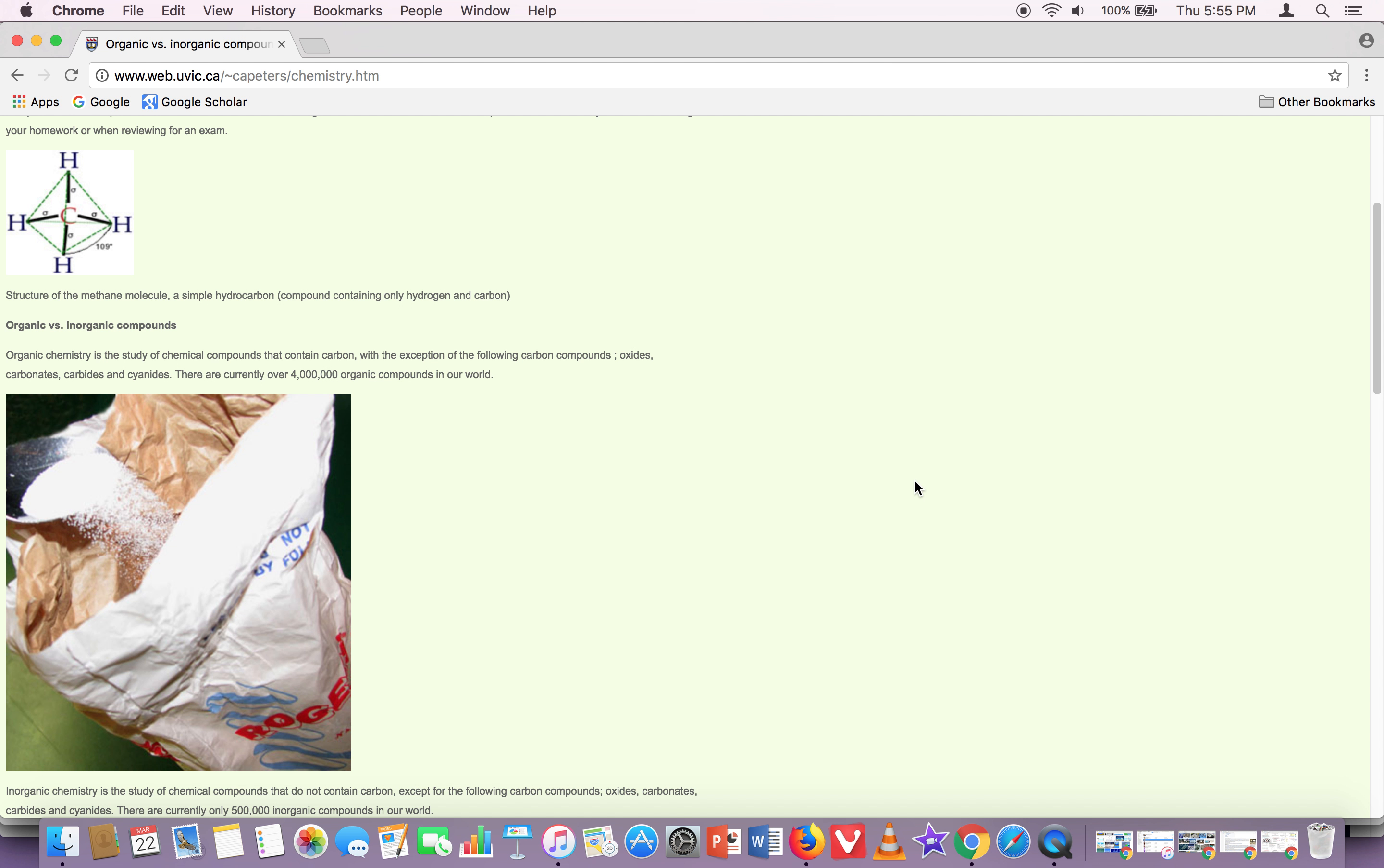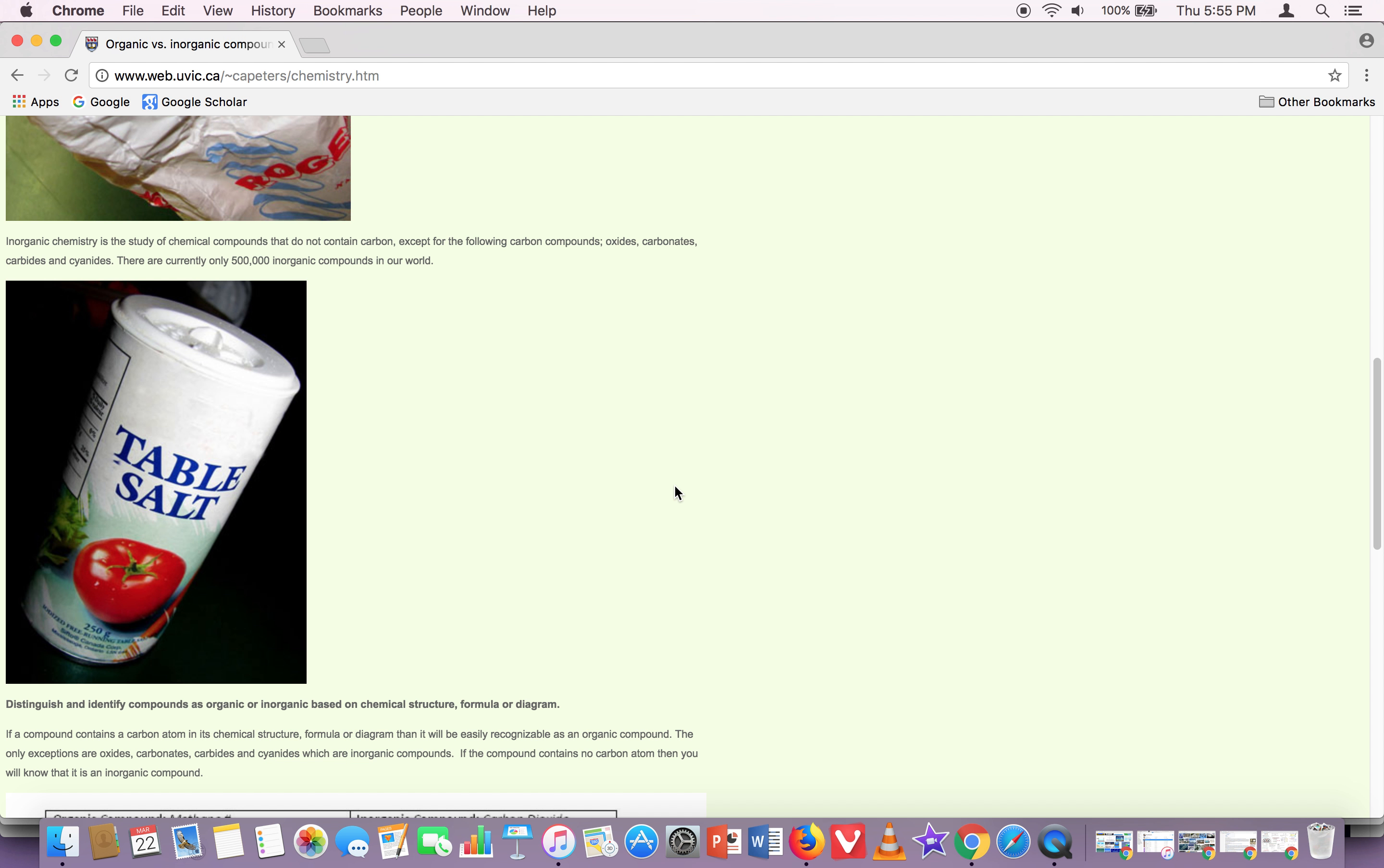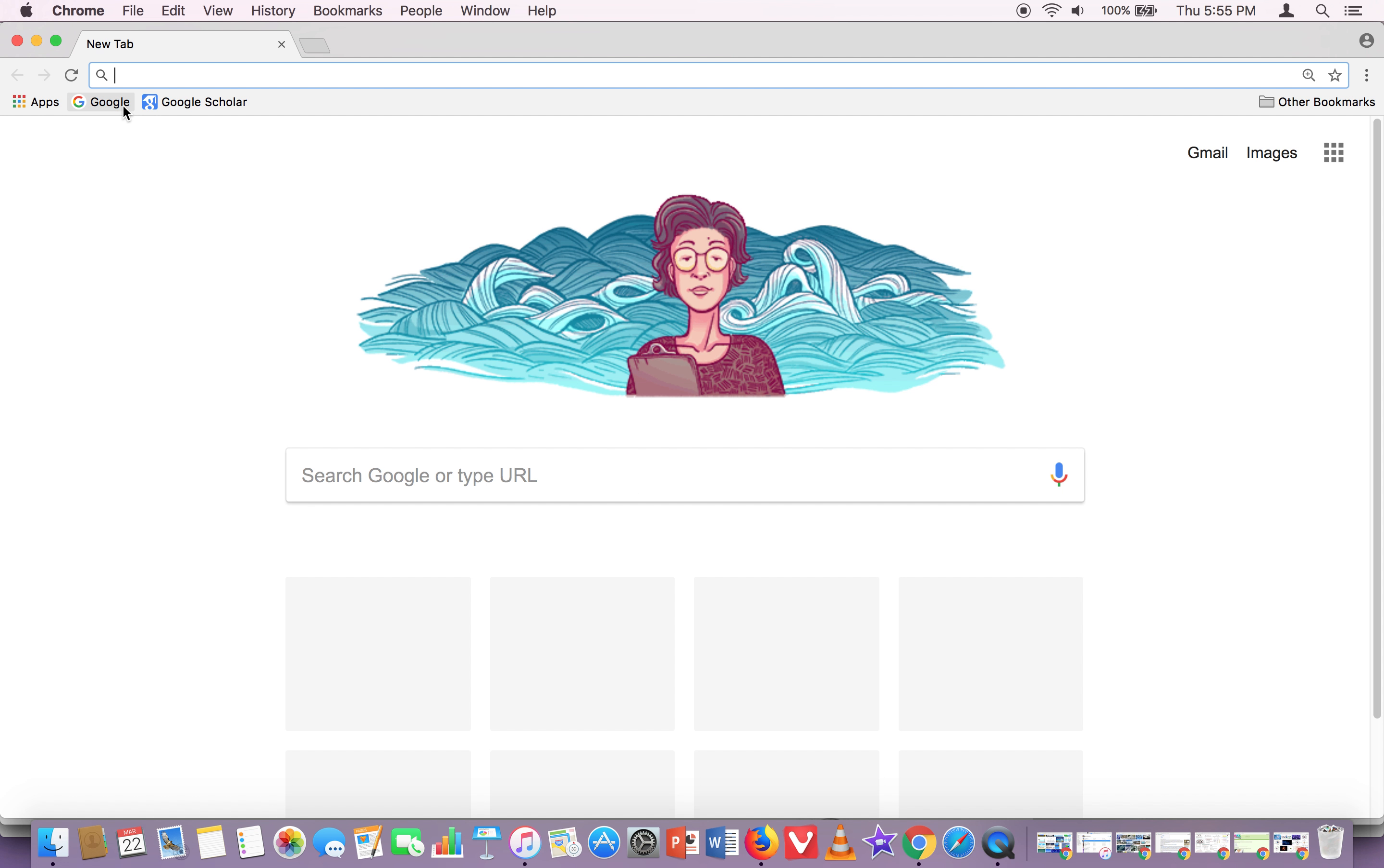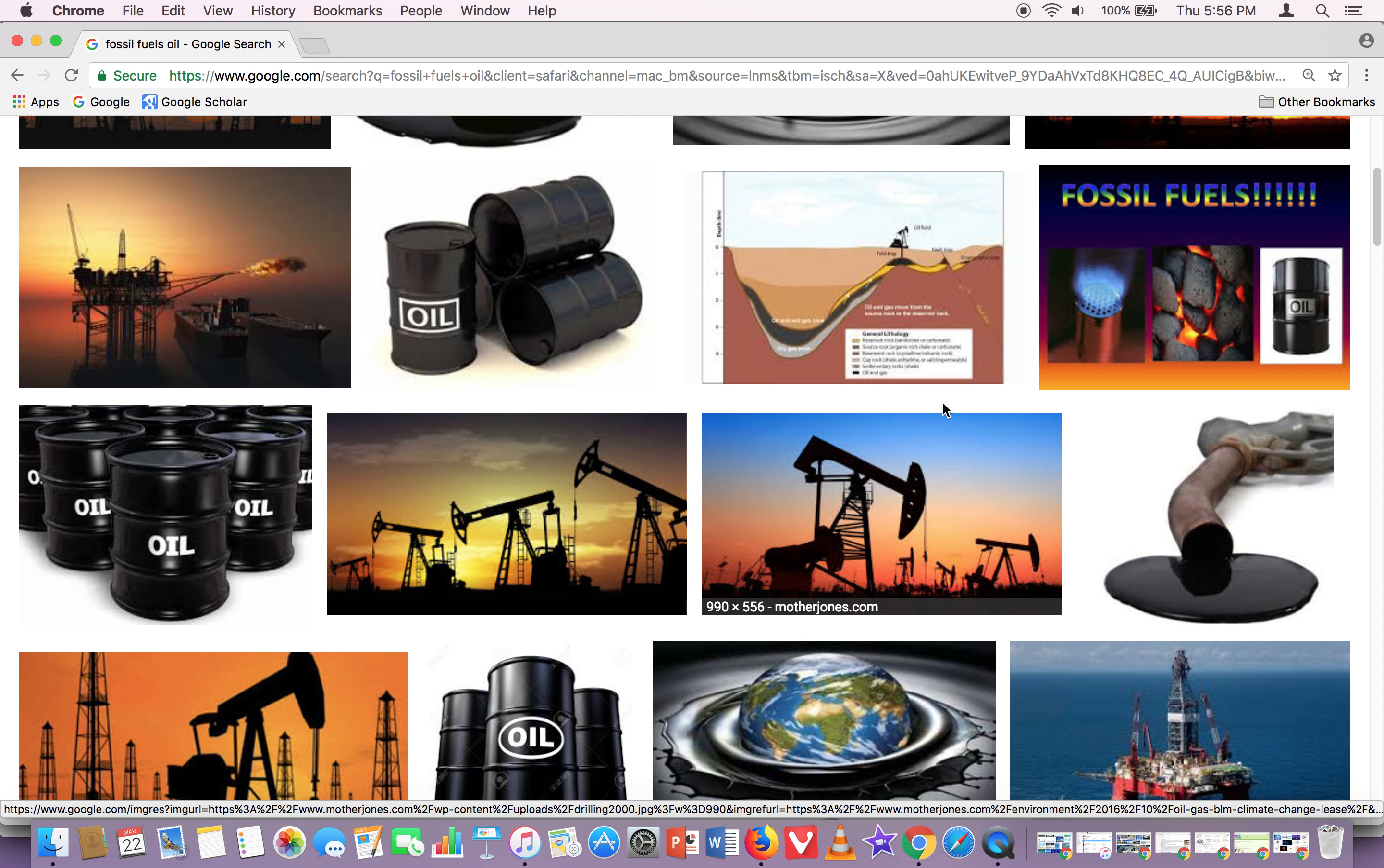Now, this is where inorganic versus organic compounds come in. When you take biology and some classes, they will talk about chemical compounds that contain carbon and different oxides. There's over four million organic compounds in our world. And the thing about organic versus inorganic is when you're changing your states of matter, you will notice, have you heard of fossil fuels, have you heard of oil or coal? The oil is liquid, right?